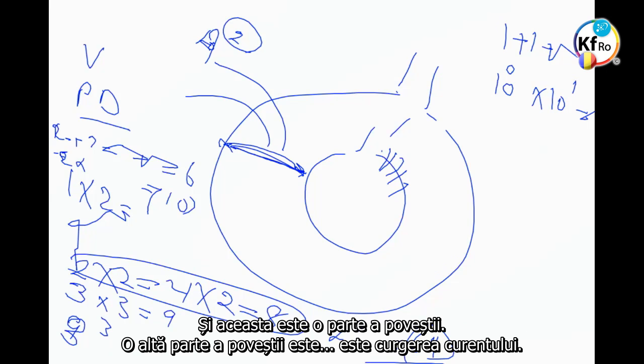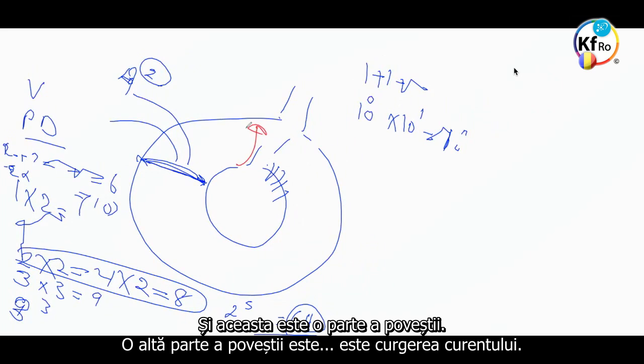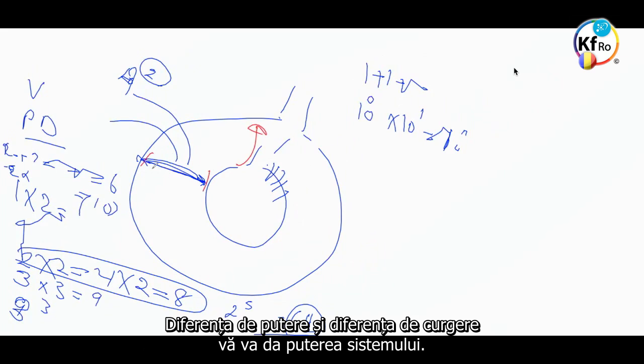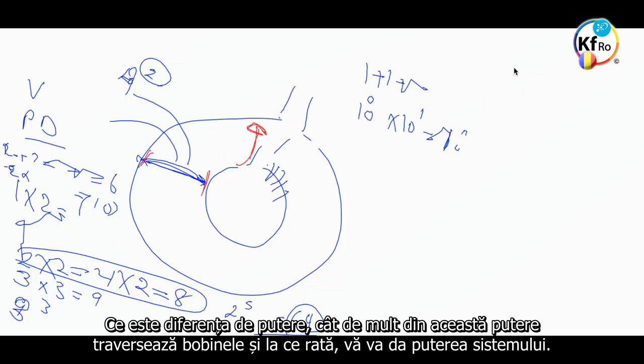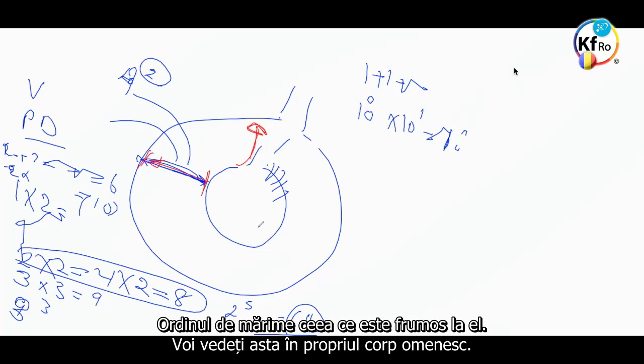The other part of the story is the current flow. The strength difference and the flow difference will give you the power of your system. What is the strength difference, and how much of that strength travels across at what rate, will give you the power of your system. That's why John is adding a power supply to each section so they can start controlling. This is the order of magnitude, which is the beauty of it.